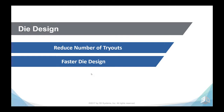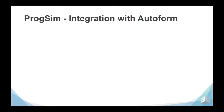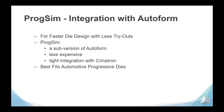Let us move now to die design. In die design, we can today in version 14 reduce the number of tryouts and achieve faster die design. We are introducing Prog Sim, which is an integration of AutoForm for faster die design with less tryouts. Prog Sim is a sub-version of AutoForm, less expensive, with tight integration with Symmetron, and it best fits automotive progressive dies.